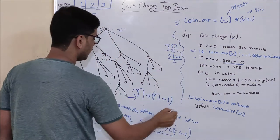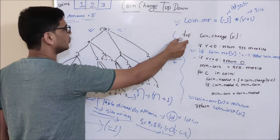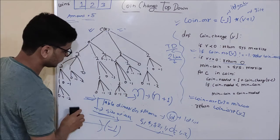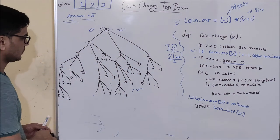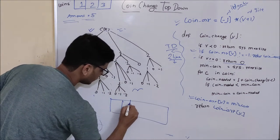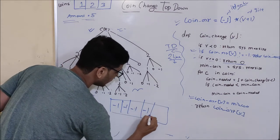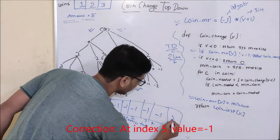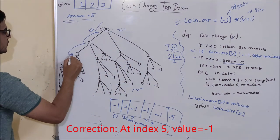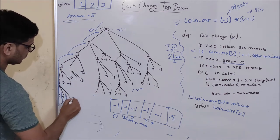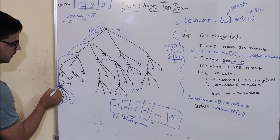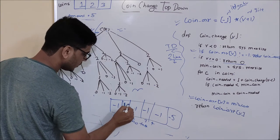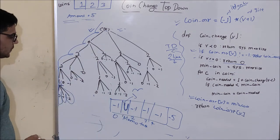So this is my top-down code now. And if you execute this particular code on this example, then let's see how the recursion tree will look. This is my coinR memo table, with indices 0, 1, 2, 3, 4, 5. This is my recursion tree. As you can see here, 1 is returning — so before returning, I will update it in the table. Let me denote that I have updated this particular cell.